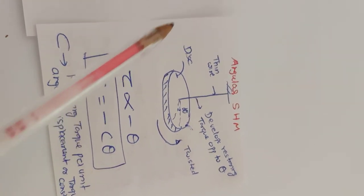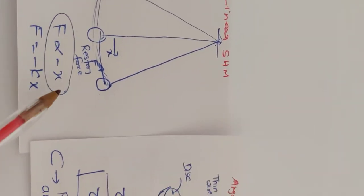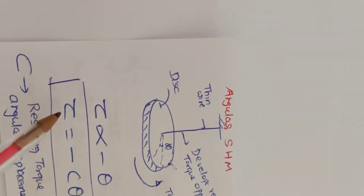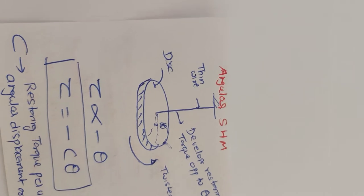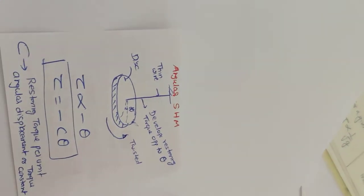Here, minus X represents restoring force and displacement are opposite in direction. So here, restoring torque and angular displacement are opposite in direction. And once you take it, leave it, what happens?